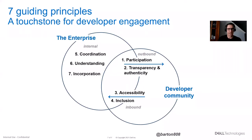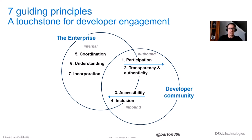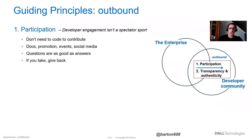Let's jump into the seven guiding principles. I've organized them using two intersecting circles — the enterprise and the developer community. I've broken these into outbound, inbound, and internal. Outbound is what your company should keep in mind when looking out towards the developer community and interacting. Inbound is what you need to do for them when they are looking to access information and offers that you have. And then internal is within your own company — what you need to do to foster an understanding and support of developers. The first outbound principle is participation.